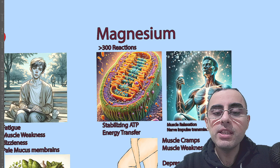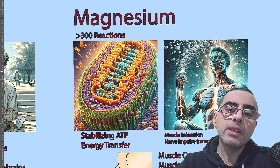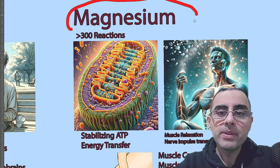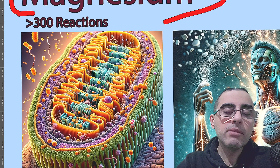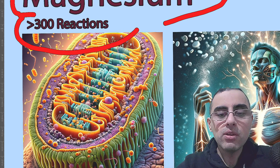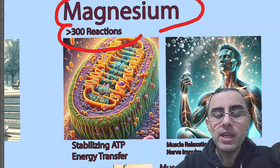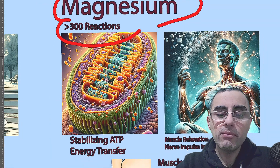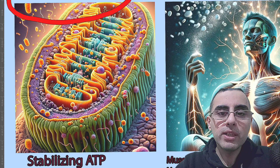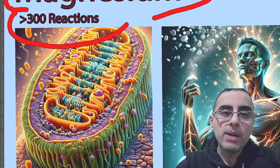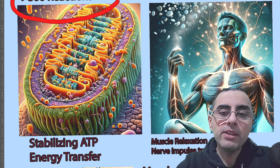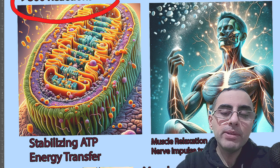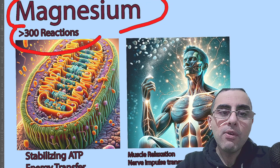Now let's look at the second most common deficient mineral — it's magnesium. Magnesium is a very important mineral, participating in more than 300 reactions. The first and most important function of magnesium is stabilizing ATP, which is the main energy source for our cells. That's why magnesium is important for energy transfer.